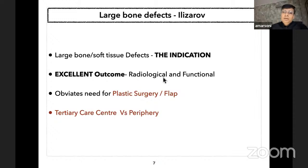Ilizarov is indicated for large bone defect. It not only addresses the bone defect but the soft tissue defect as well. It gives excellent outcomes both radiologically and functionally, obviating the need for plastic surgery and flap coverage. In contrast to cases treated at tertiary care centers with an orthoplasty approach, one can treat such patients in the periphery with a single-handed orthopedic surgeon.